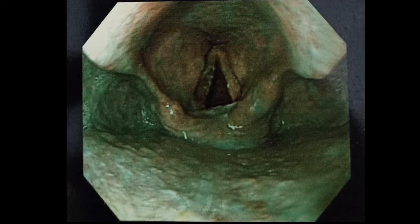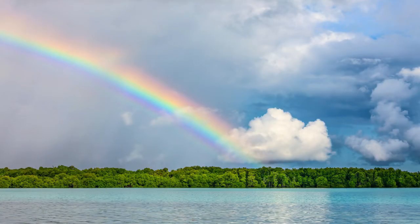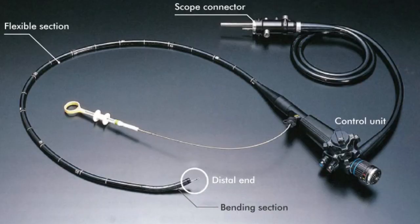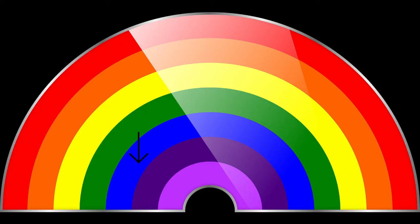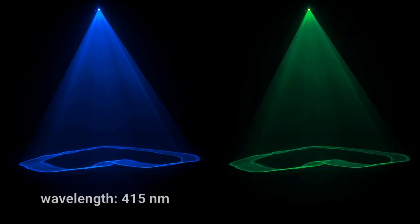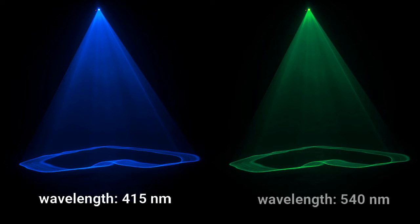Normal light has seven colors in it. In narrow band imaging, with the help of a switch in the endoscope, a special filter is electronically activated. This filter filters out all colors except the blue and green light from the normal white light, and only blue and green light are projected. Blue light has a wavelength of 415 nanometers and green light has a wavelength of 540 nanometers.